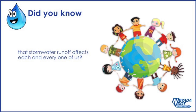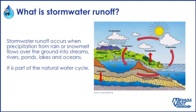Did you know that stormwater runoff affects each and every one of us? What is stormwater runoff? Stormwater runoff occurs when precipitation from rain or snowmelt flows over the ground into streams, rivers, ponds, lakes, and oceans.